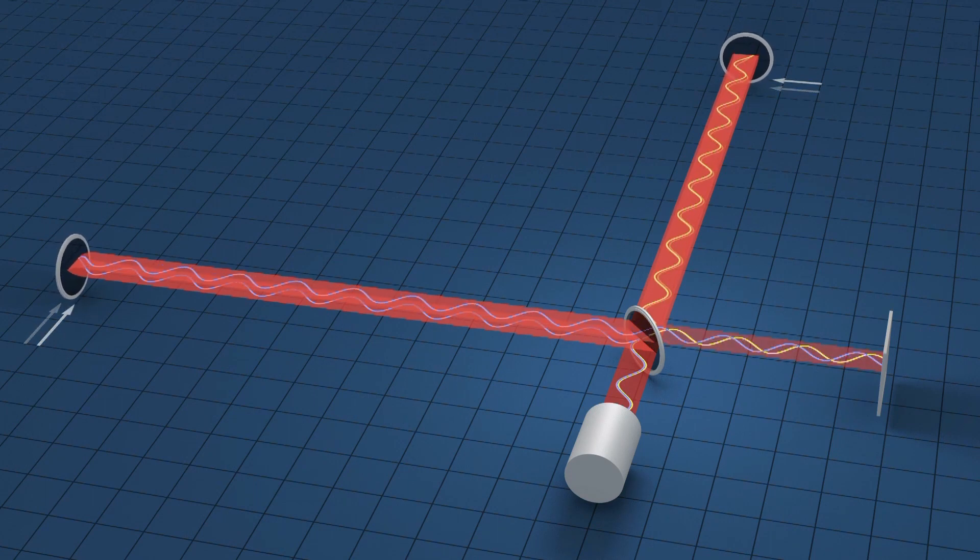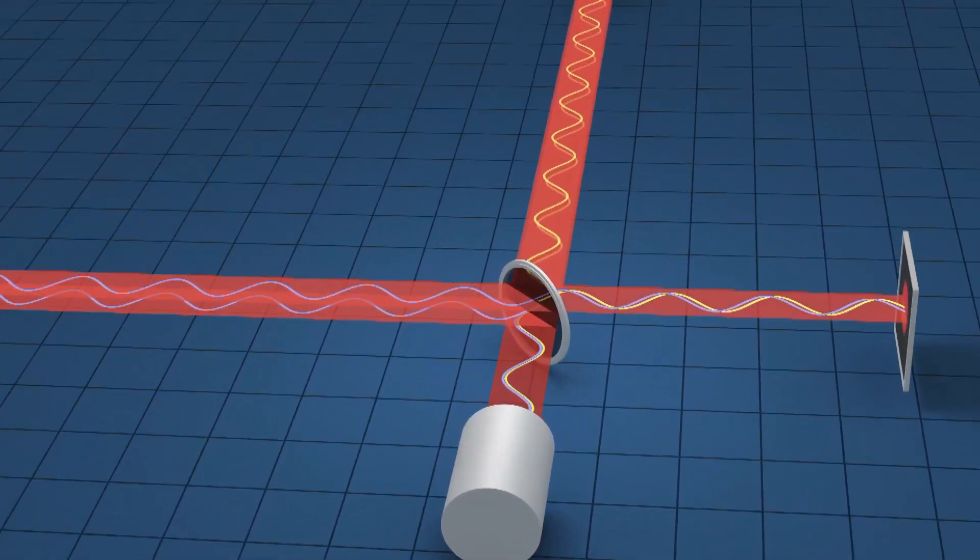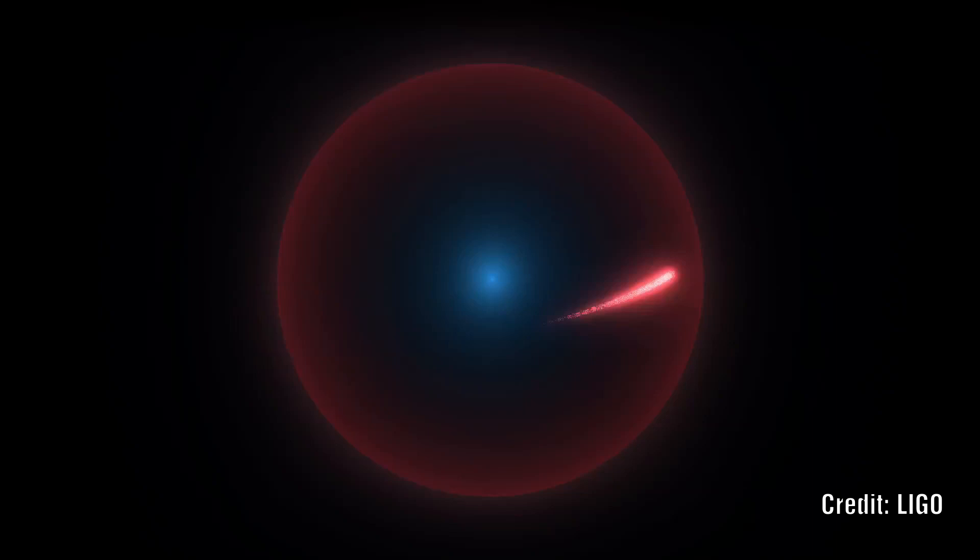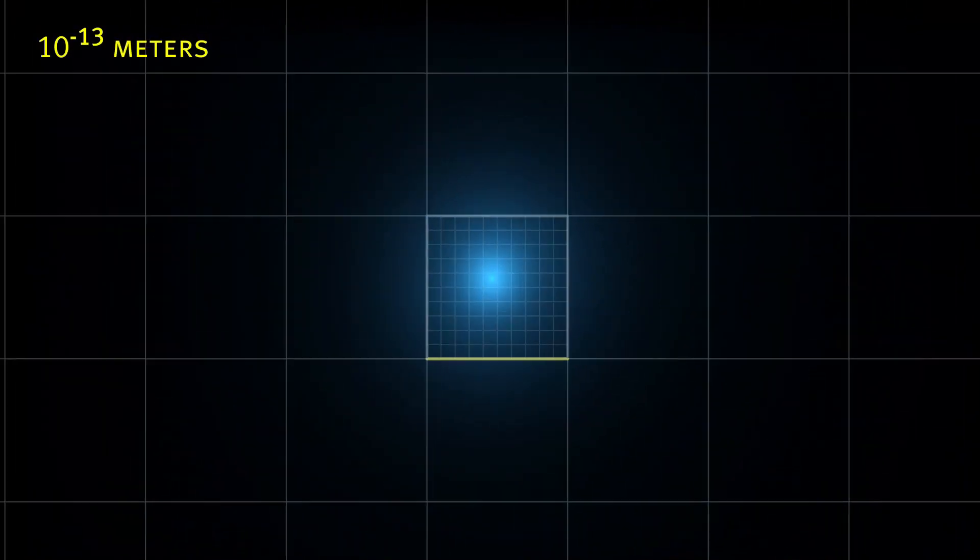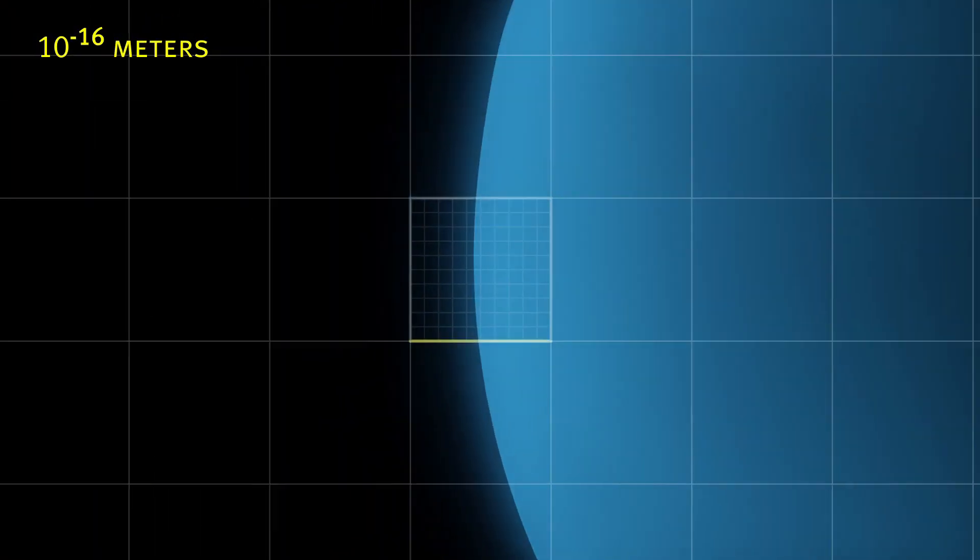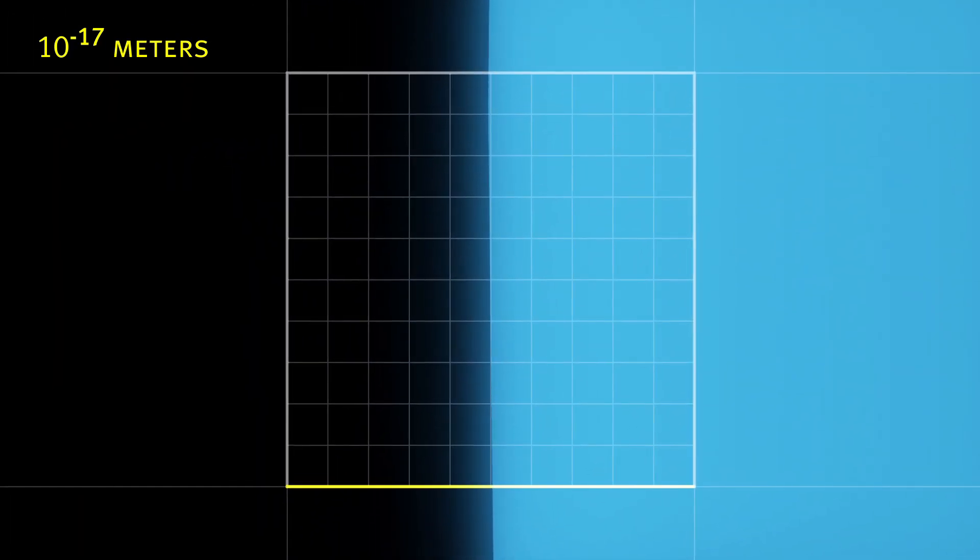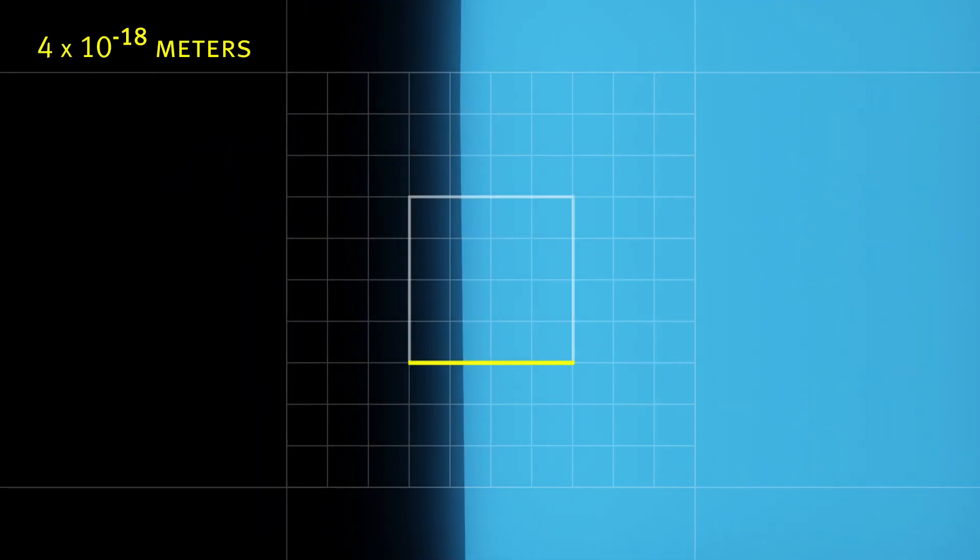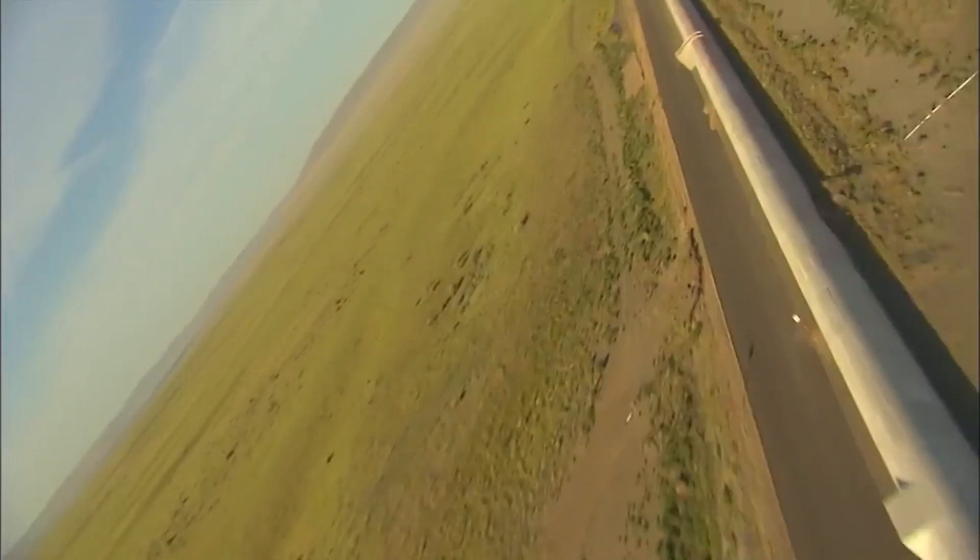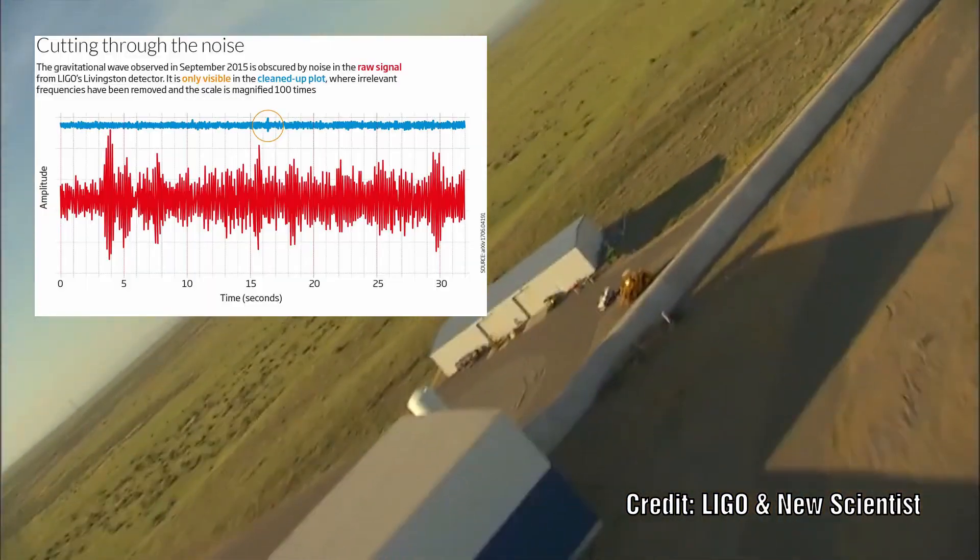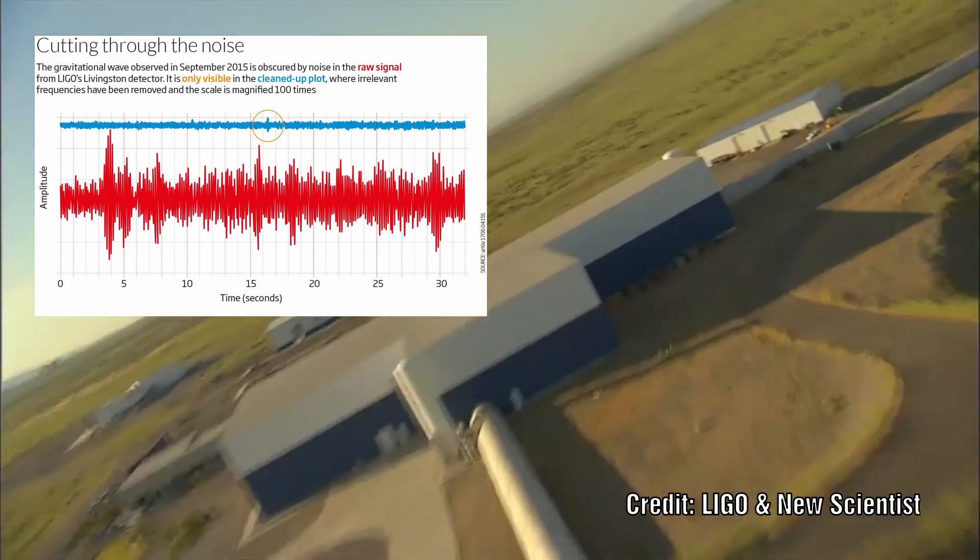If any change in length occurs in either of the tunnels, an interference pattern is created on the return beam. The problem is that they are trying to detect changes as small as a thousandth of the diameter of a proton. And this is far smaller than the disturbances that come from background seismic tremors and even natural thermal vibrations of the detector hardware. And this is why they require more than one detector. They corroborate the signal by knowing that these waves must travel at the speed of light. They subtract the common signal and what is left out is the ambient background noise.